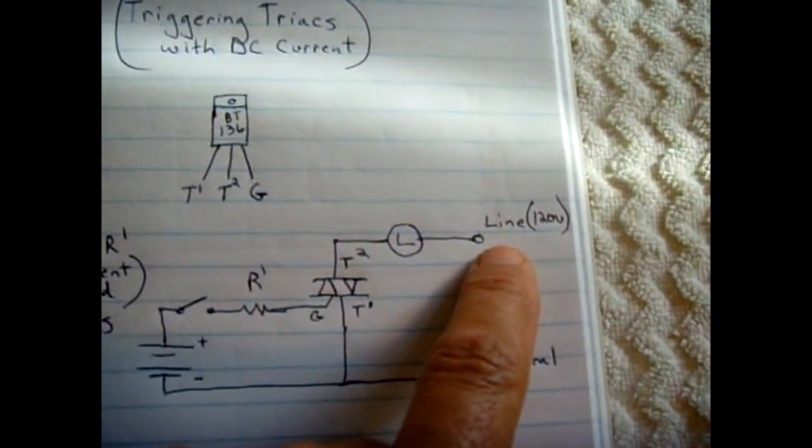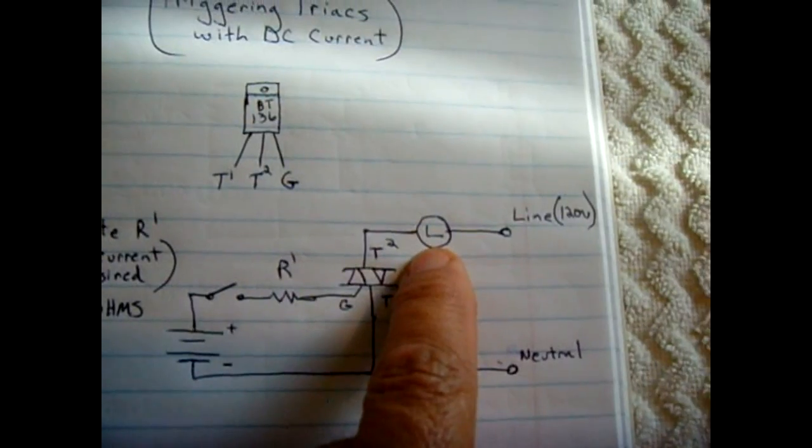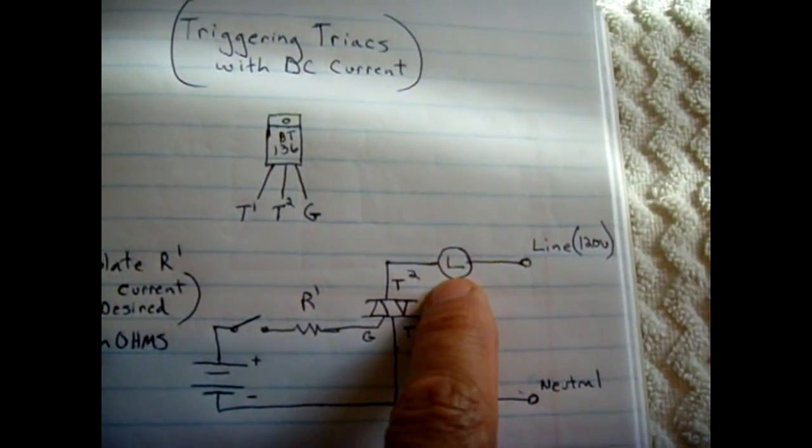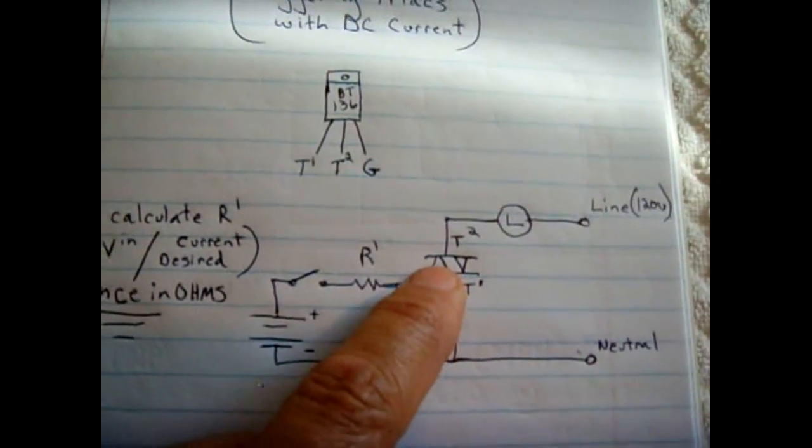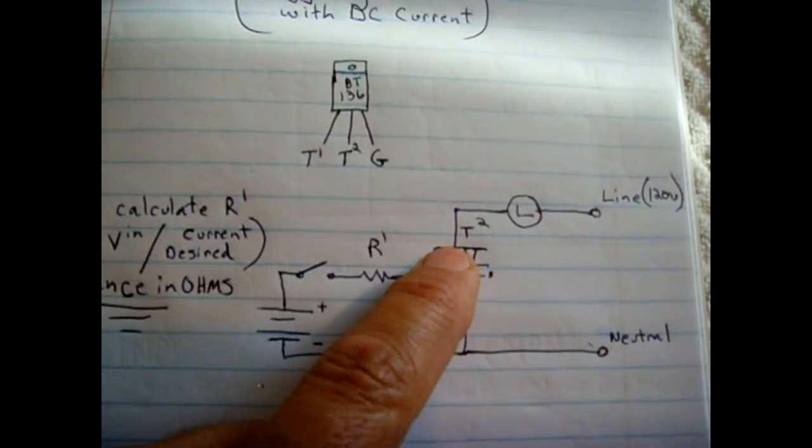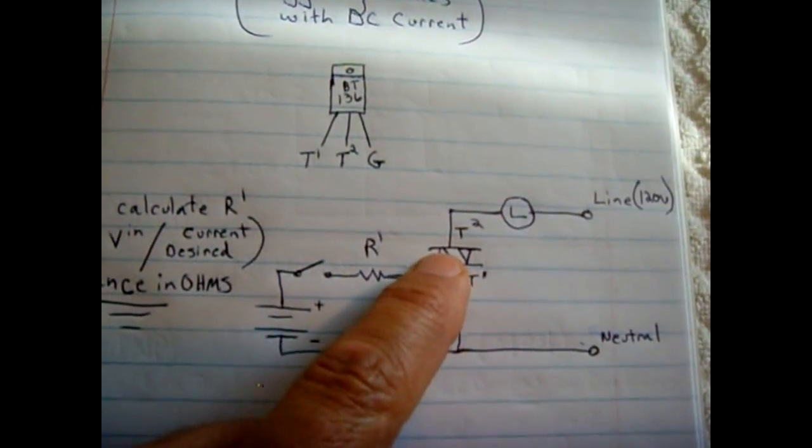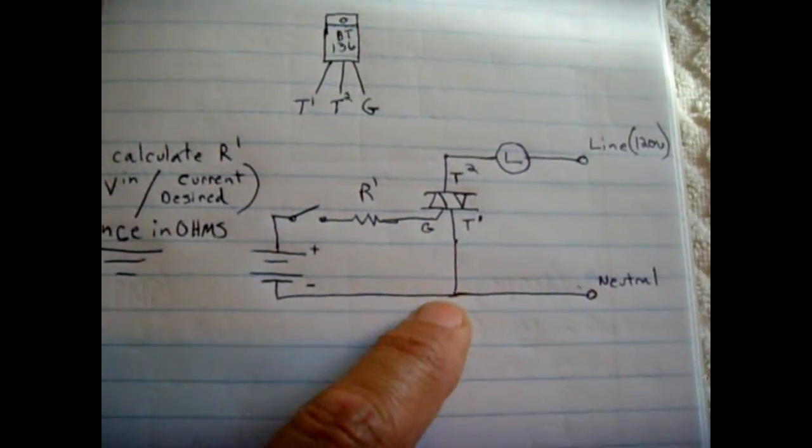On a 120 volt circuit, your line coming in goes into the load, could be anything—a light, electronic device—flows into the triac which is T2. When it leaves T2 it goes into T1, connecting to the neutral rail completing the circuit.